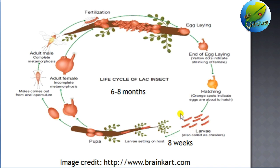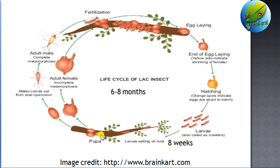Within two hours of egg laying, mostly all larvae will be emerging. This is why it is called the viviparous nature of the egg — viviparous means the emergence of larva as soon as the egg is laid. The larvae emerging from the egg in huge numbers are called crawlers, and their emergence is called swarming. In the case of lac, the emergence of larva is specifically called swarming.